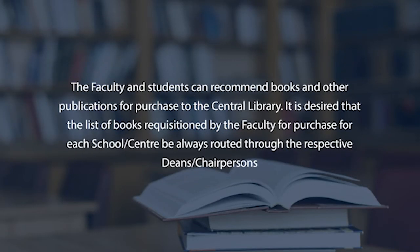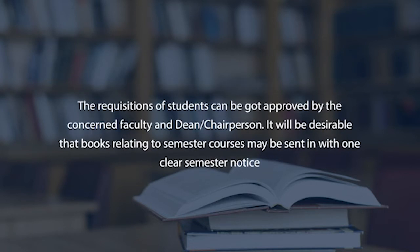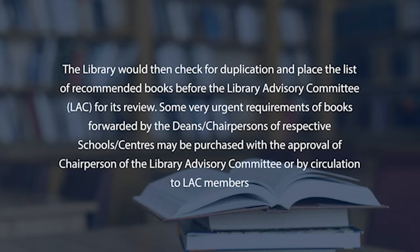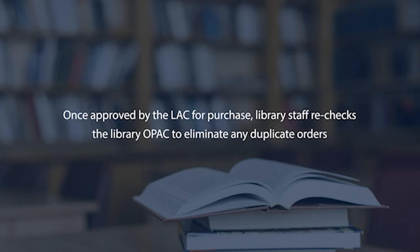Faculty and students can recommend books for purchase to the central library. Lists of books requisitioned by faculty for each school or center should always be routed through the respective deans or chairpersons. Student requisitions can be approved by the concerned faculty and dean. Books relating to semester courses may be sent with one clear semester's notice. The library checks for duplication and places the recommended list before the library advisory committee for review.